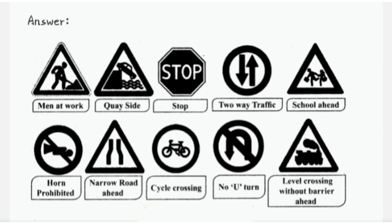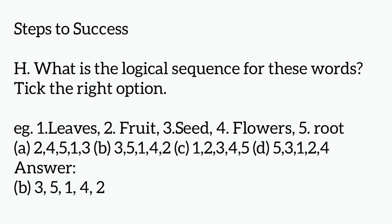Fourth one, horn prohibited. Next one, narrow road ahead. Next one, cycle crossing. Next one, no U-turn. Next one, level crossing without barrier ahead.